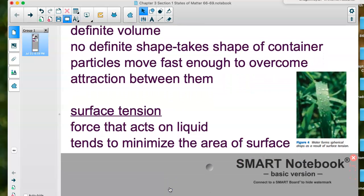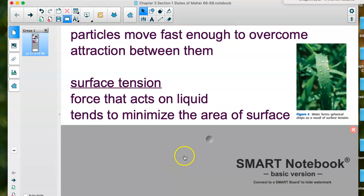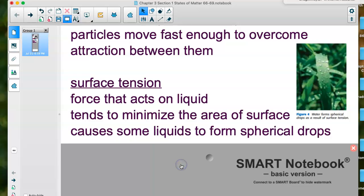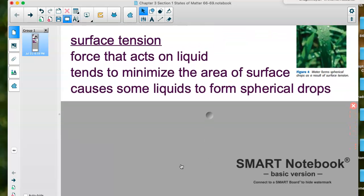We should always mention surface tension when we talk about liquids. You can see on the far right there, that is some dew on grass in the morning. You get what's called surface tension. This is a force that acts on a liquid, and it minimizes the surface area. It does cause some liquids to form these spherical drops. You've seen that before when we talk about dew.